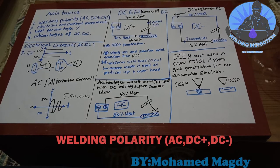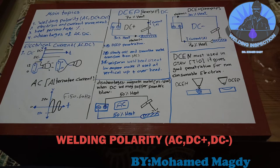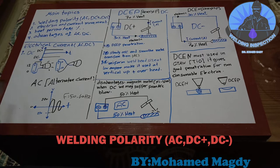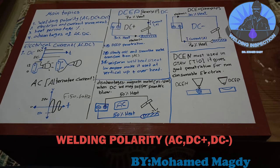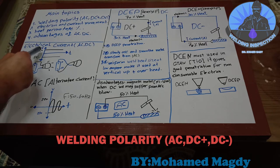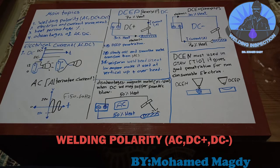As-salamu alaykum. I am engineer Muhammad Magdi. Let's talk about welding polarity: AC, DC positive, DC negative, electron and current movement, heat percentage, and advantages of AC and DC. Introduction about electrical current: there is alternating current (AC), which changes direction with time, and direct current (DC), which is constant with time. An example of DC is a battery.